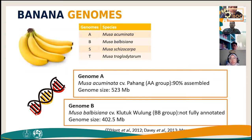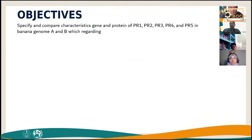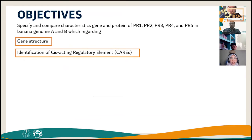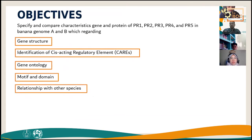This study conducted in silico comparative genomics analysis to characterize PR1 through PR5 genes from Musa acuminata cultivar Pahang (genome A) and Musa balbisiana cultivar Kulonprogo (genome B). Objectives included comparing gene and protein characteristics regarding gene structure, cis-acting regulatory elements (CAREs), gene ontology, motifs, domains, and phylogenetic relationships. Protein sequences from Arabidopsis thaliana were used as model organisms; T-BLASTN was performed in Banana Genome Hub against genomes A and B. Sequence alignment used EMBOSS Needle for percent identity; gene structure visualization used FGENESH+ and IBS software.